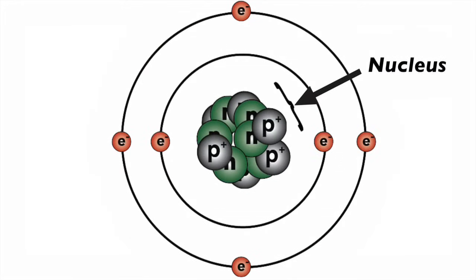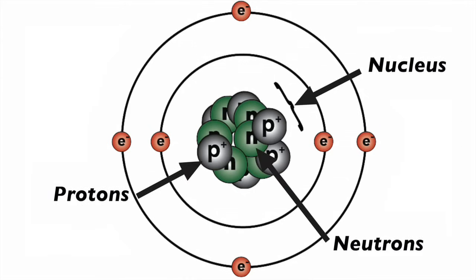Almost all the mass of an atom is found in a dense core called a nucleus. The nucleus is made up of positively charged particles called protons and other particles called neutrons that have no charge at all.